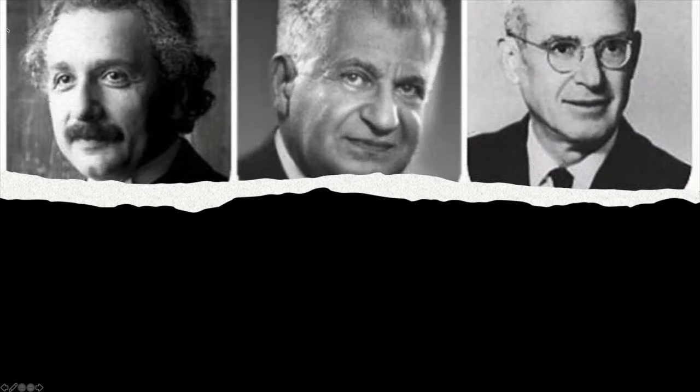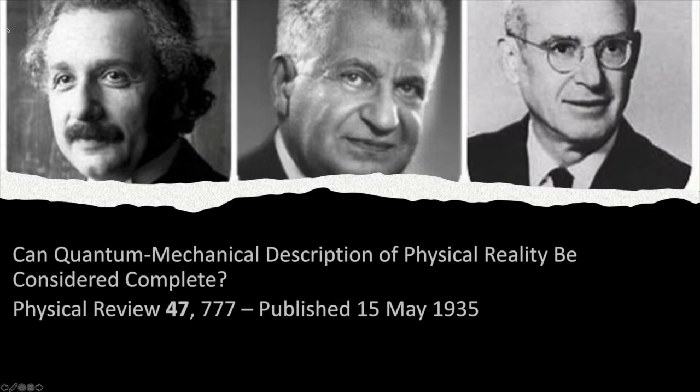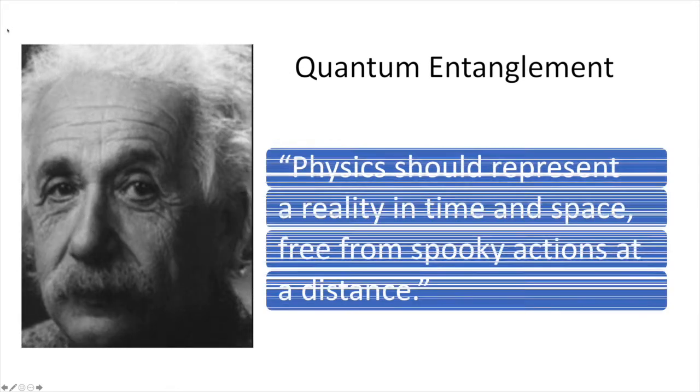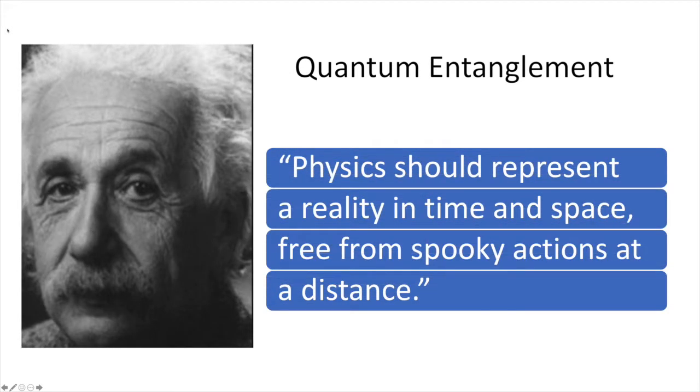In 1935, Einstein, Podolsky, and Rosen famously predicted that quantum mechanics would permit distantly separated objects to affect each other's behavior instantaneously. This phenomenon is now called quantum entanglement, but Einstein referred to it pejoratively as spooky actions at a distance.